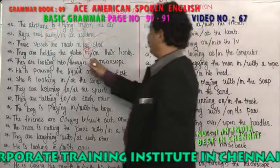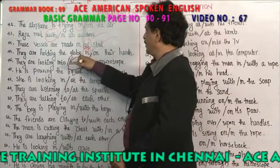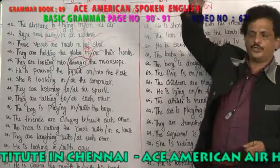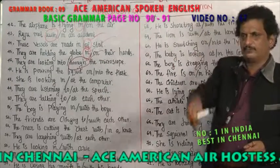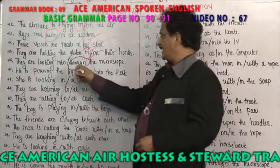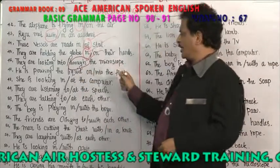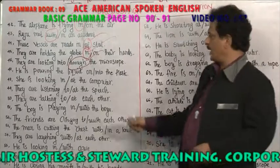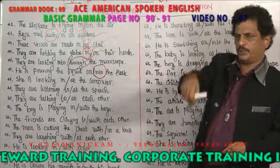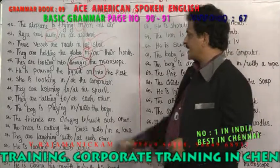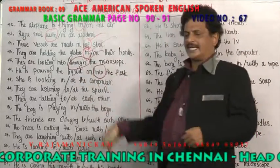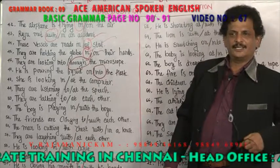They are looking through the microscope or into the microscope? 'Into' is used for something coming from top to bottom, and 'through' means going through a way or passage. He is pouring the liquid on the flask or into the flask? 'Into the flask' — because the pouring goes from top to bottom.